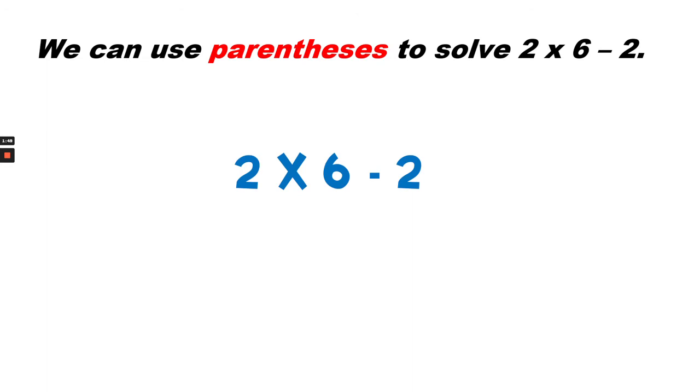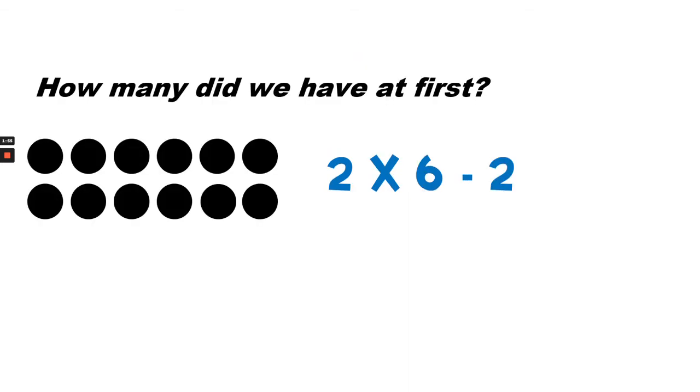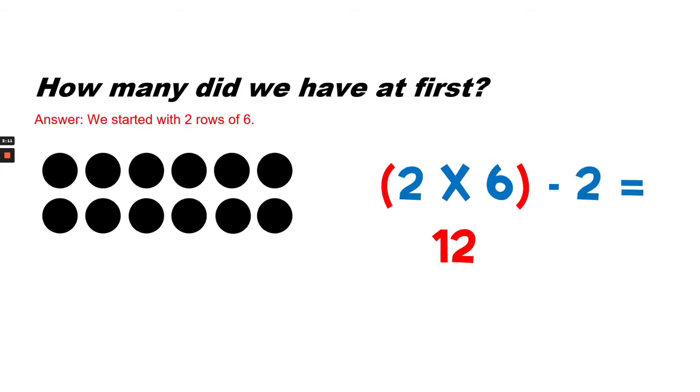2 times 6 minus 2. What should we do first? We can use parentheses to solve 2 times 6 minus 2. So first, we had 2 rows of 6. So we would write the parentheses around 2 rows of 6. We know that 2 times 6 equals 12. So we've completed the first step. The first step is always what's in parentheses. The parentheses say that we should multiply 2 times 6 and the product would be 12.